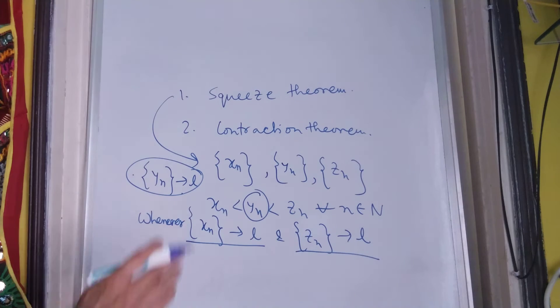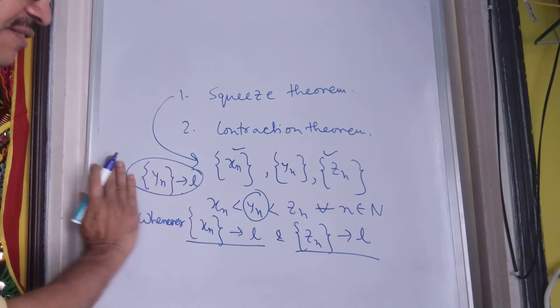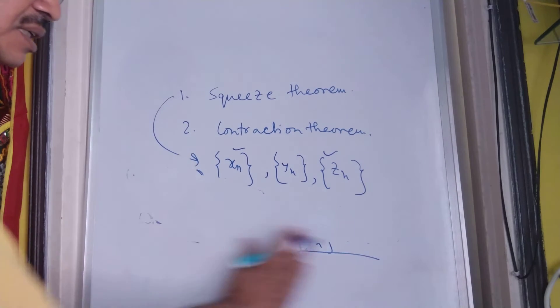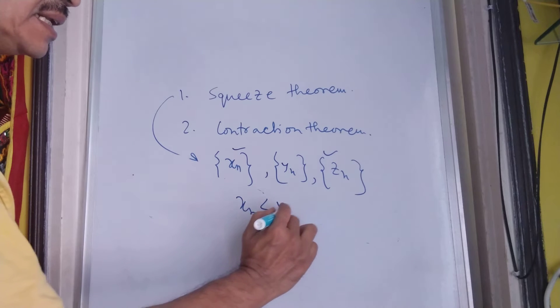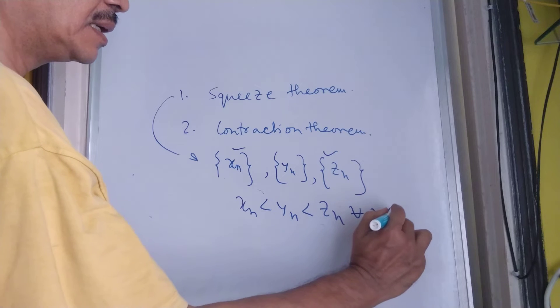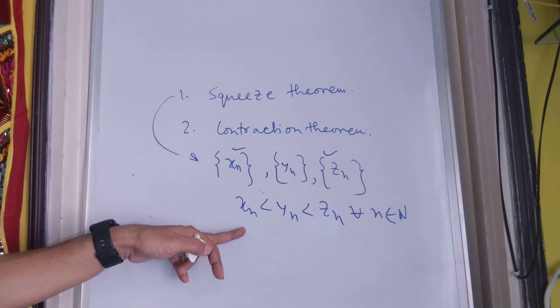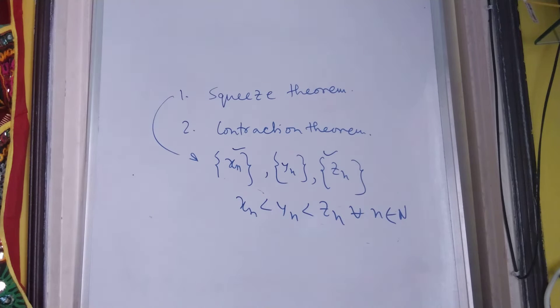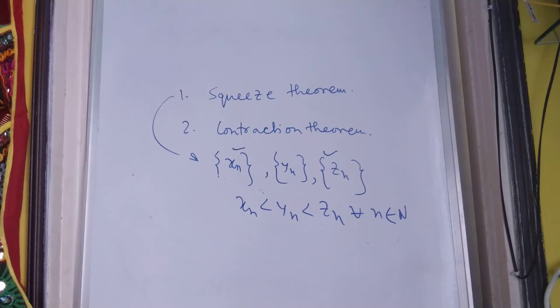Whenever these two are divergent and this inequality persists, that all xn and zn is such that xn less than yn less than zn, and if xn and zn diverge, then yn will diverge.